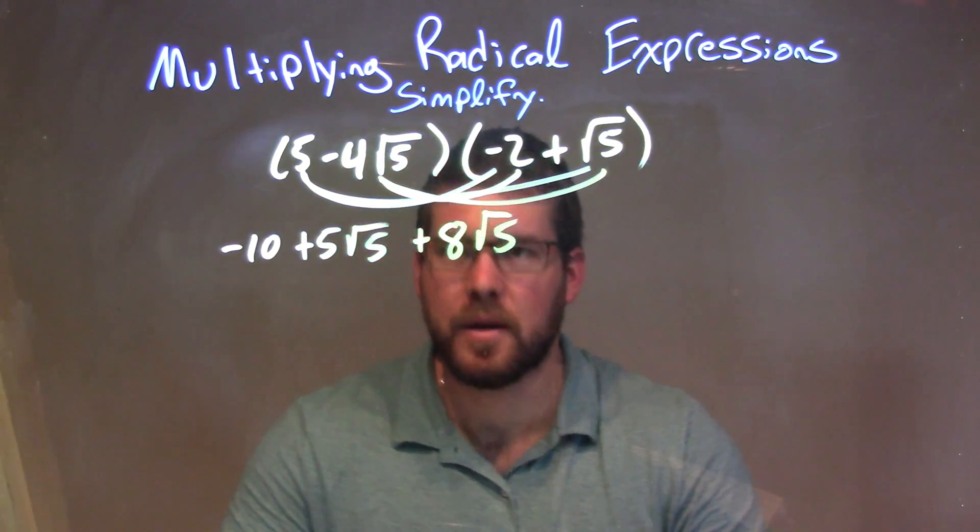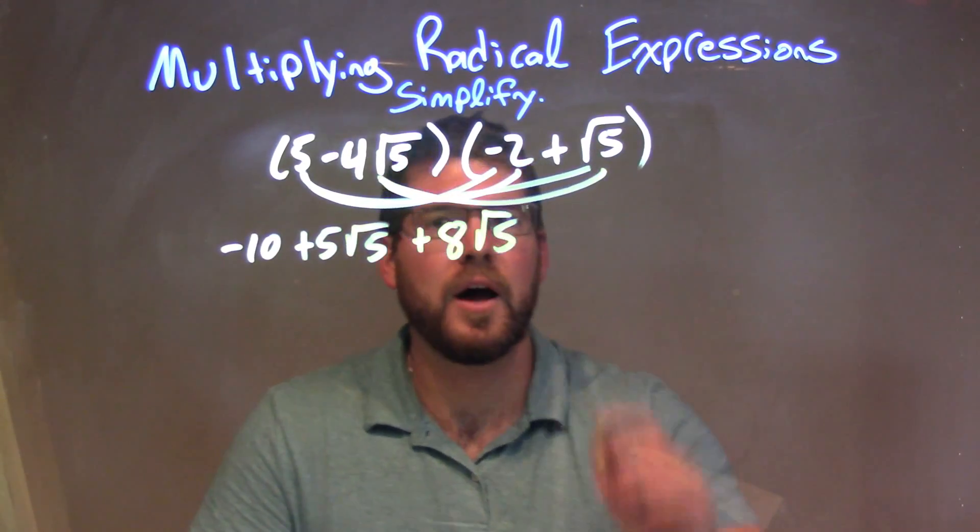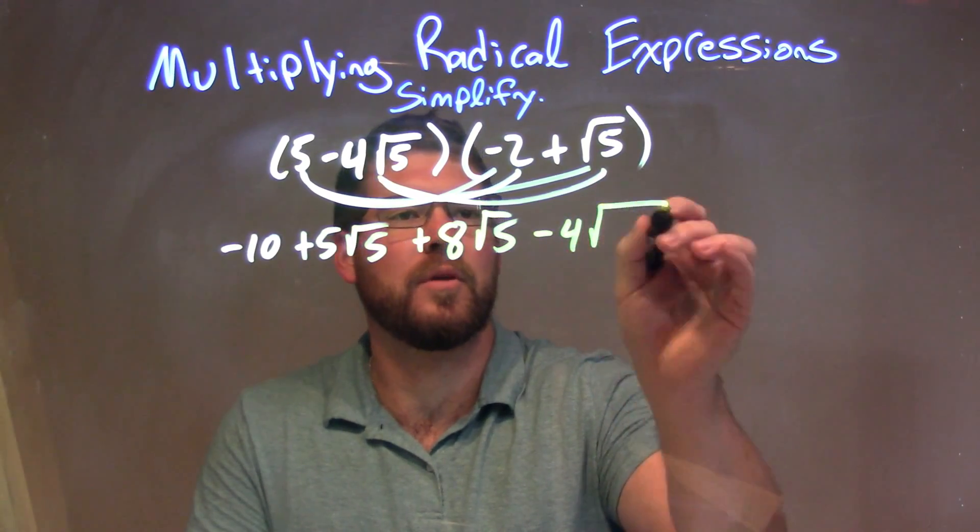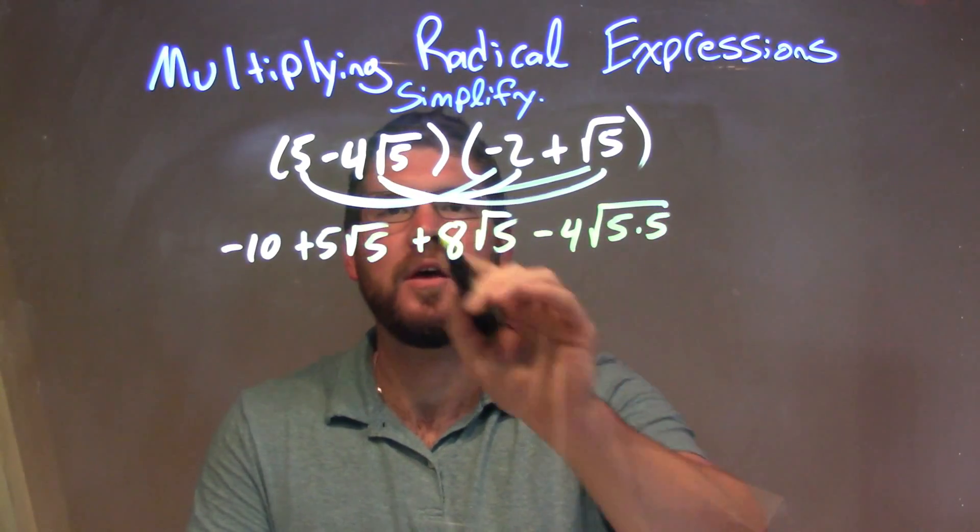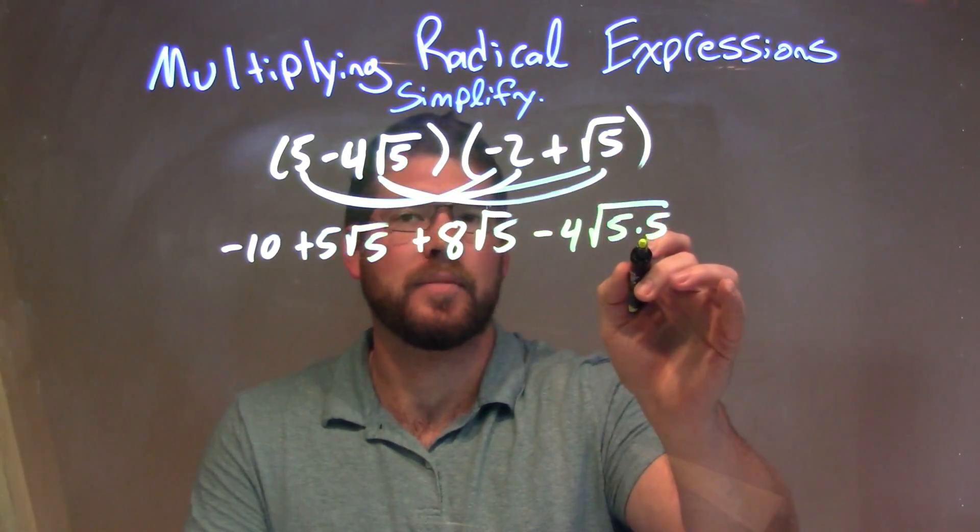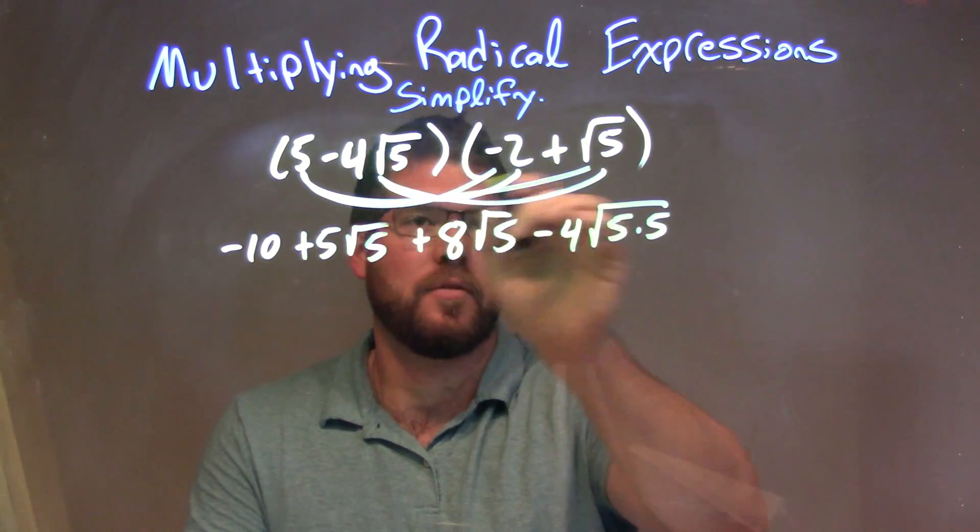And then, minus 4 times the square root of 5, times the square root of 5, is just a minus 4, square root of 5 times 5. We can combine the square roots into 1 big square root multiplication, and the 4 is just on the outside.